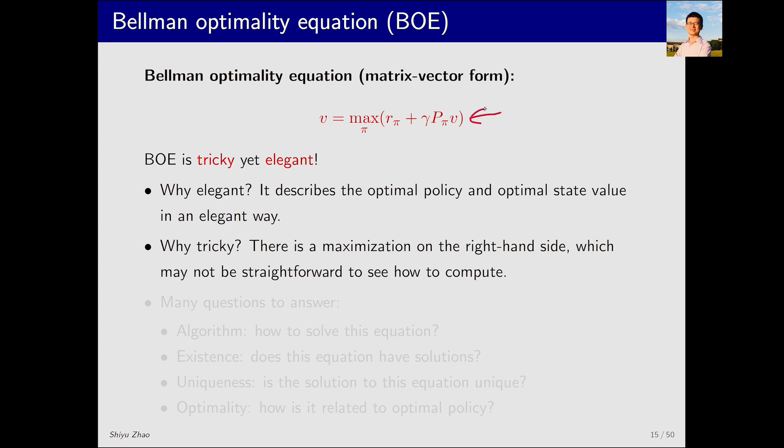This is the Bellman optimality equation. It is tricky, yet elegant. Why elegant? Because its expression is very concise and it describes the optimal policy and optimal state value in an elegant way. Why tricky? On one hand, there is a maximization on the right-hand side. On the other hand, it may not be straightforward to see how to solve it.